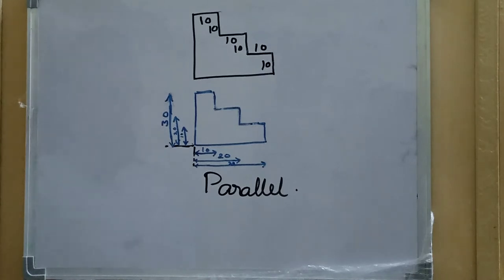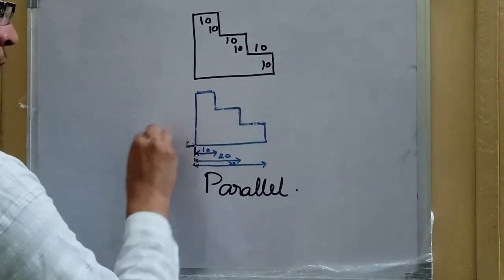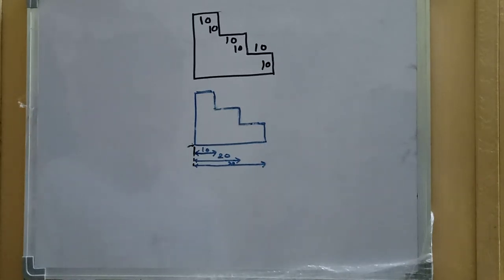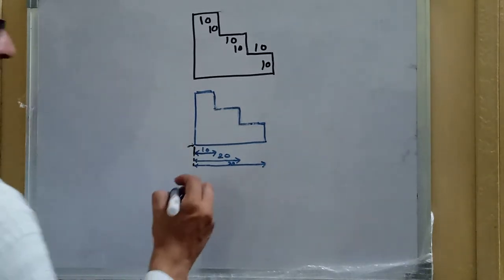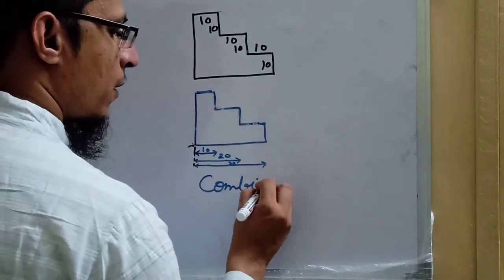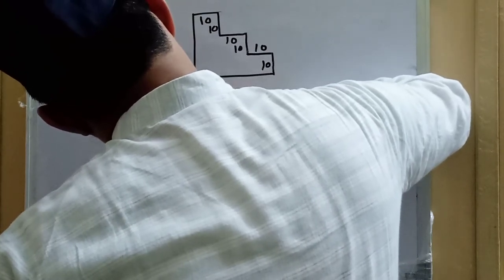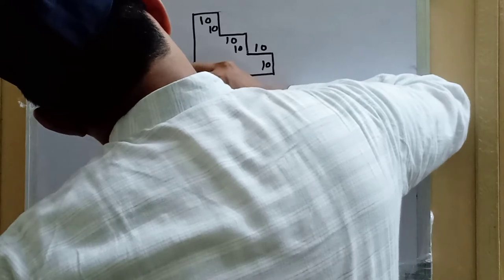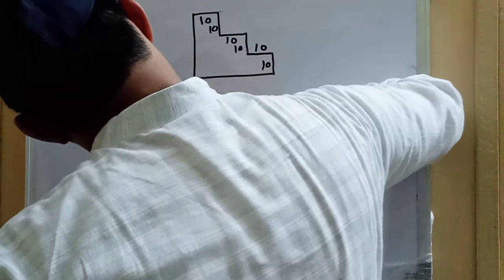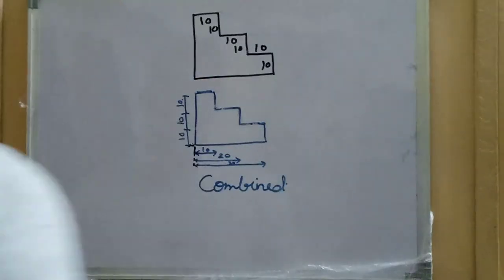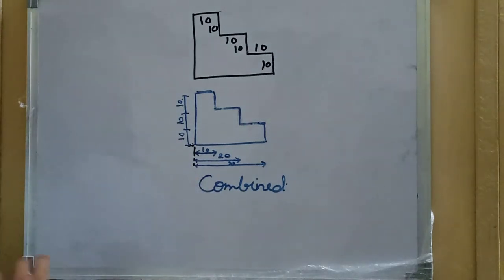In combined dimensioning, suppose in the horizontal direction we follow parallel dimensioning, but in the vertical direction we use chain dimensioning. In the vertical direction we have 10, 10, and 10 following the chain method. Since both chain and parallel dimensioning are present, it is called combined dimensioning.